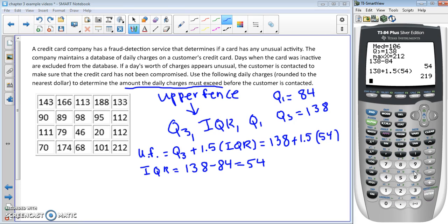We get 219. So they must exceed $219 before the customer is contacted. That's an application of using the upper fence.